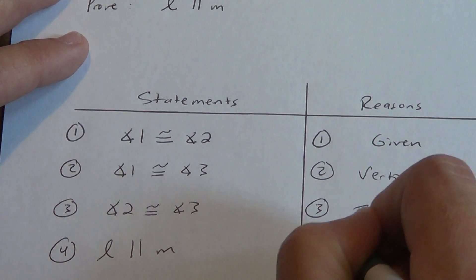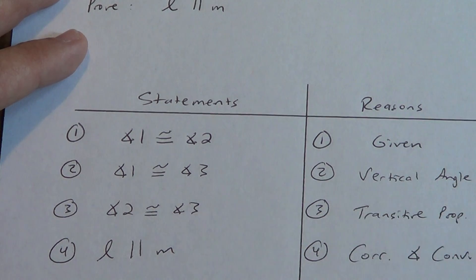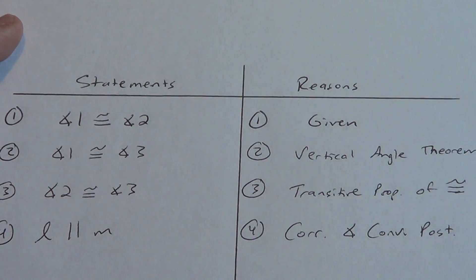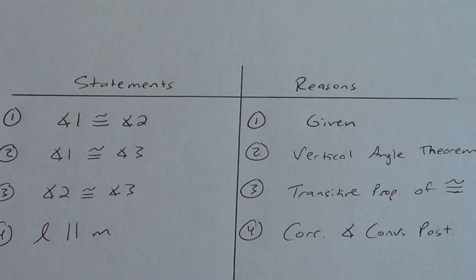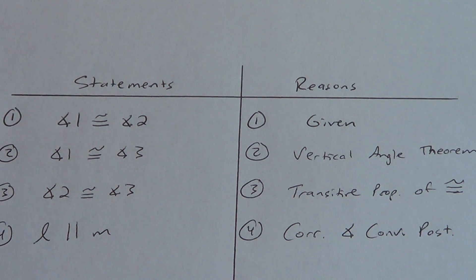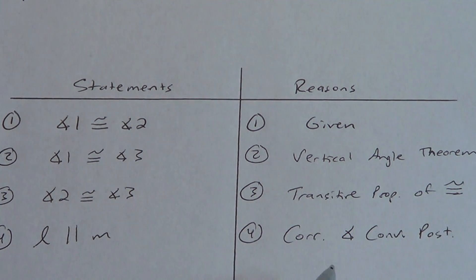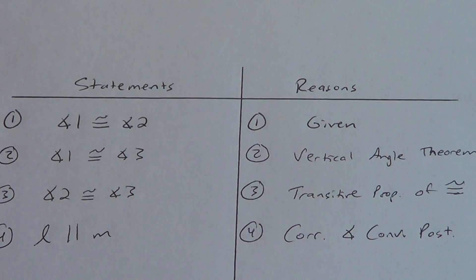And what's our reason? The corresponding angle converse postulate — we can abbreviate as long as it's clear. That's it. We proved that the alternate interior angle converse theorem works. We had to use the corresponding angle converse postulate to prove it. Remember: postulates are unproven, theorems are proven and usually based off of postulates. The vertical angle theorem was based off the linear pair postulate. That's the proof of the alternate interior angle converse theorem.